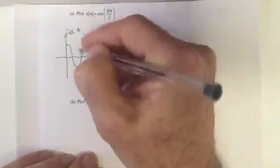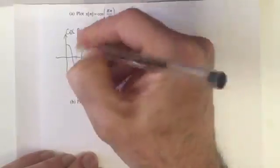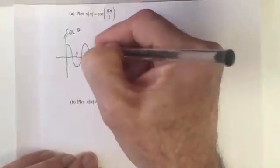The cosine waveform looks like this. We'll put the values on: this is 2π, this is 4π, this is π and 3π.